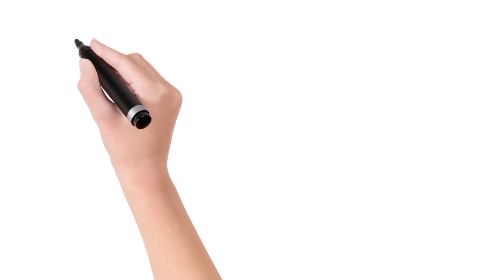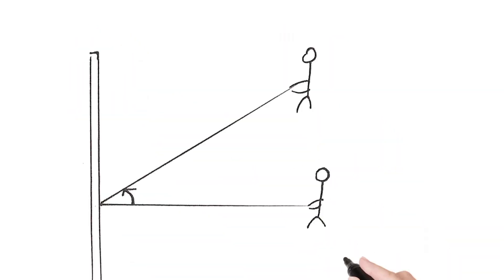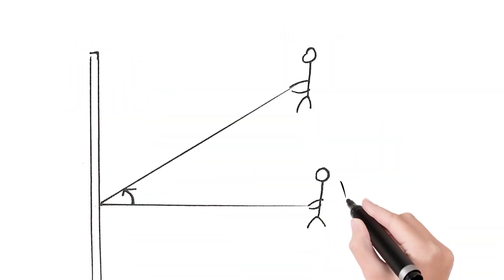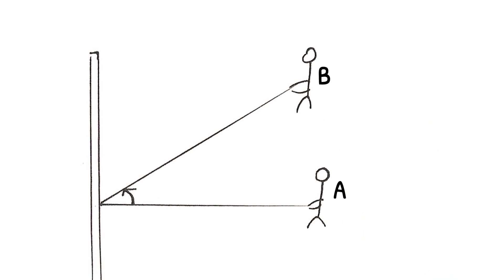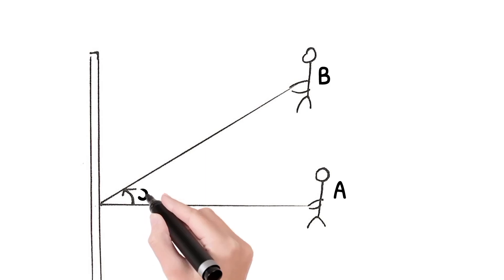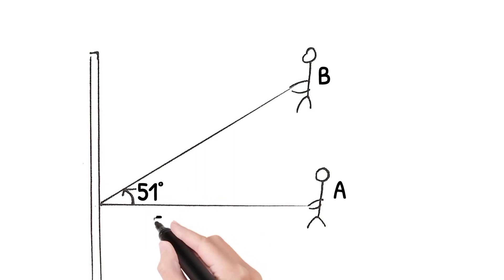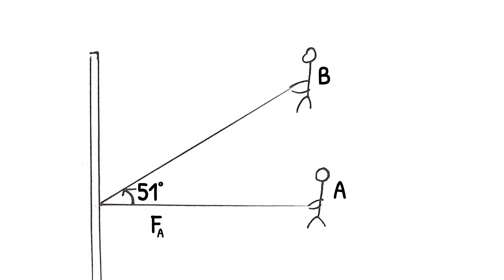Now we're going to draw this diagram. Here is boy A and boy B — two forces from boy A and boy B. The angle between the rope is 51 degrees.